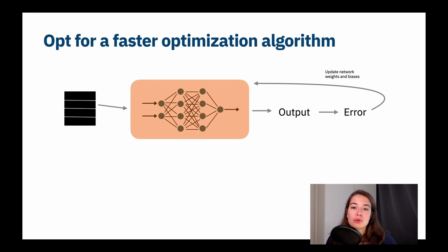The next thing that you want to do to lower the amount of time that your network needs to train is to opt for a faster optimization algorithm. Again, we talked about this in the hyperparameters lesson, but let's remember what the optimization is.